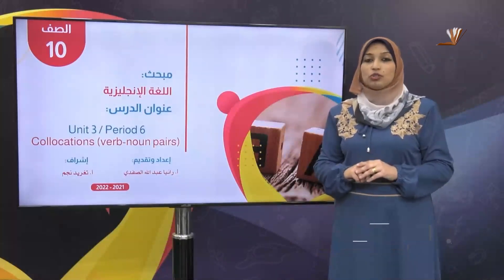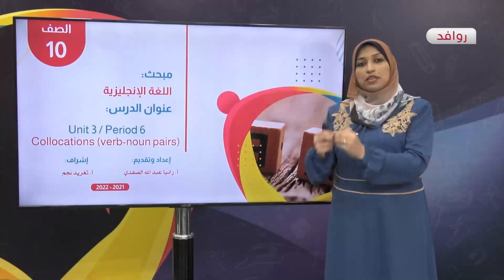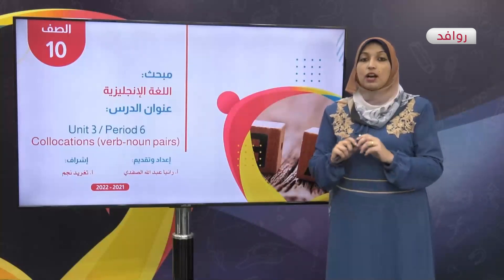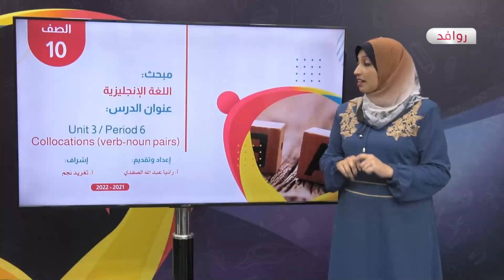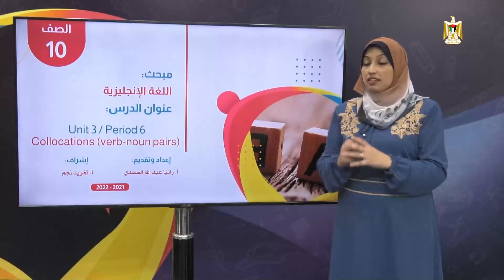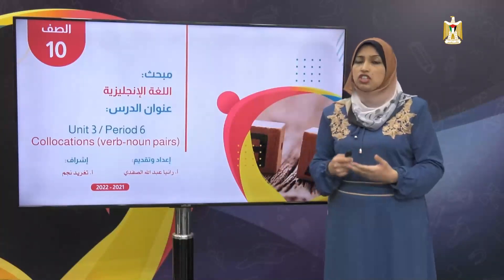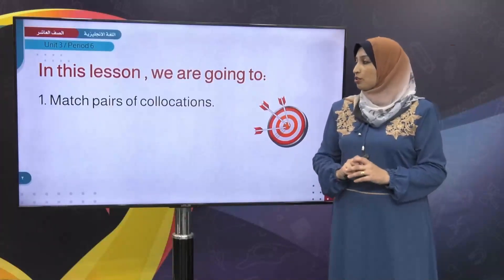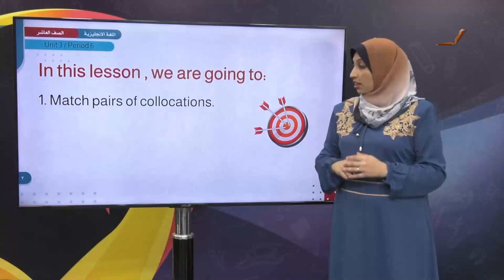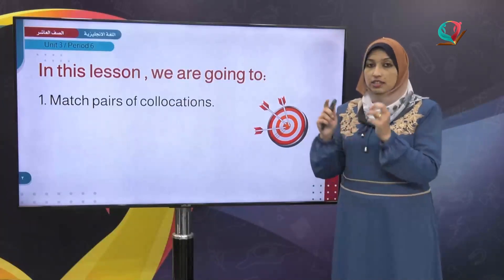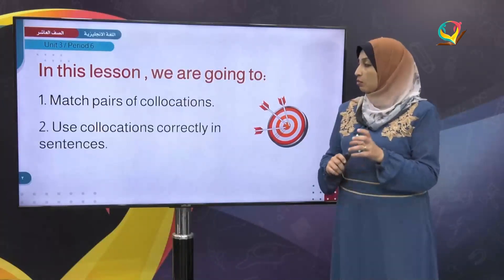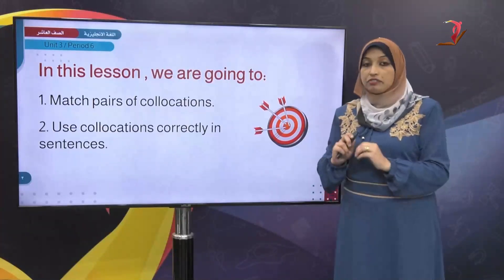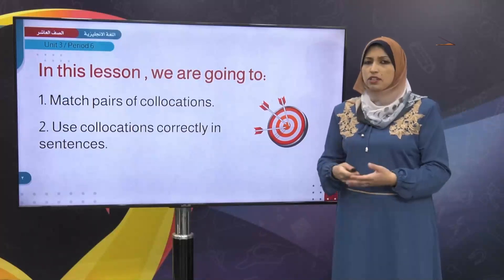Today we are going to continue with unit 3 and move to period 6. Let's start with lesson 6 in this unit. Our title today is collocations — verb-noun pairs. Let's look at the objectives of our lesson: match pairs of collocations, and use collocations correctly in sentences.